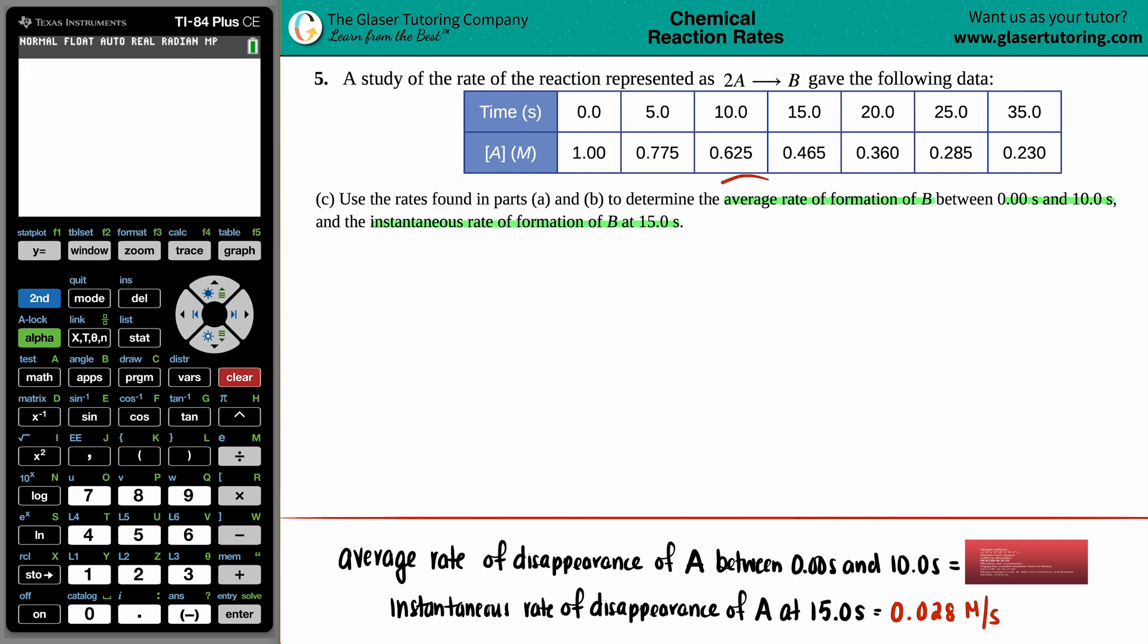Let's find the average rate of formation of B. In part a and b we found everything that was going on with compound or substance A. In this question we have to find what's going on with B. We found a rate of A - pay no mind to 'disappearance,' that's just giving context. If we look at the balanced equation 2A yields B, A is on the reactant side, so of course this is going to be dropping. By context this means it's going to be disappearing, and as A is disappearing, B is going to be going up because B is going to be appearing.